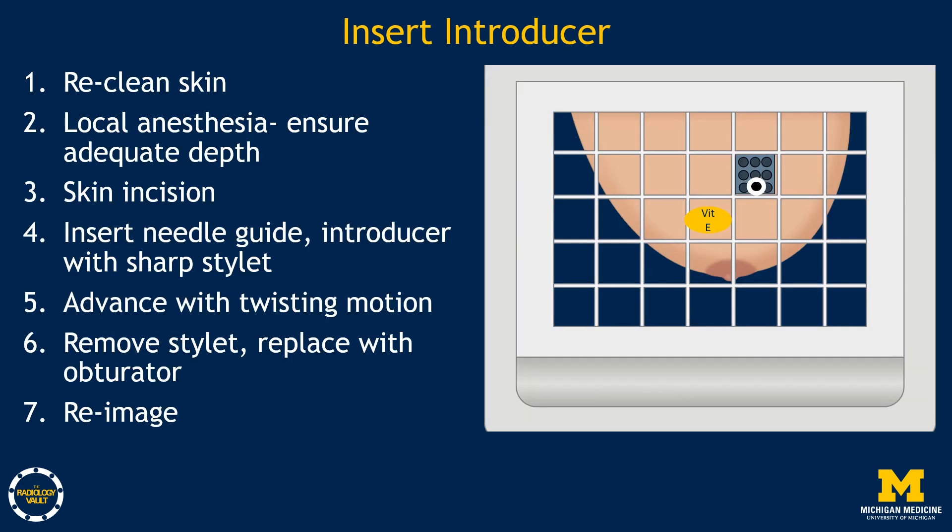Next, re-clean the skin and numb the patient's breast. Ensure that the numbing reaches the appropriate depth based on your measurements from the axial image. After numbing is complete, I usually recommend making a skin incision with a scalpel to minimize tenting or displacement of the breast when the introducer is advanced. If you use a scalpel, be sure to hand it back to the technologist if it may be ferromagnetic.